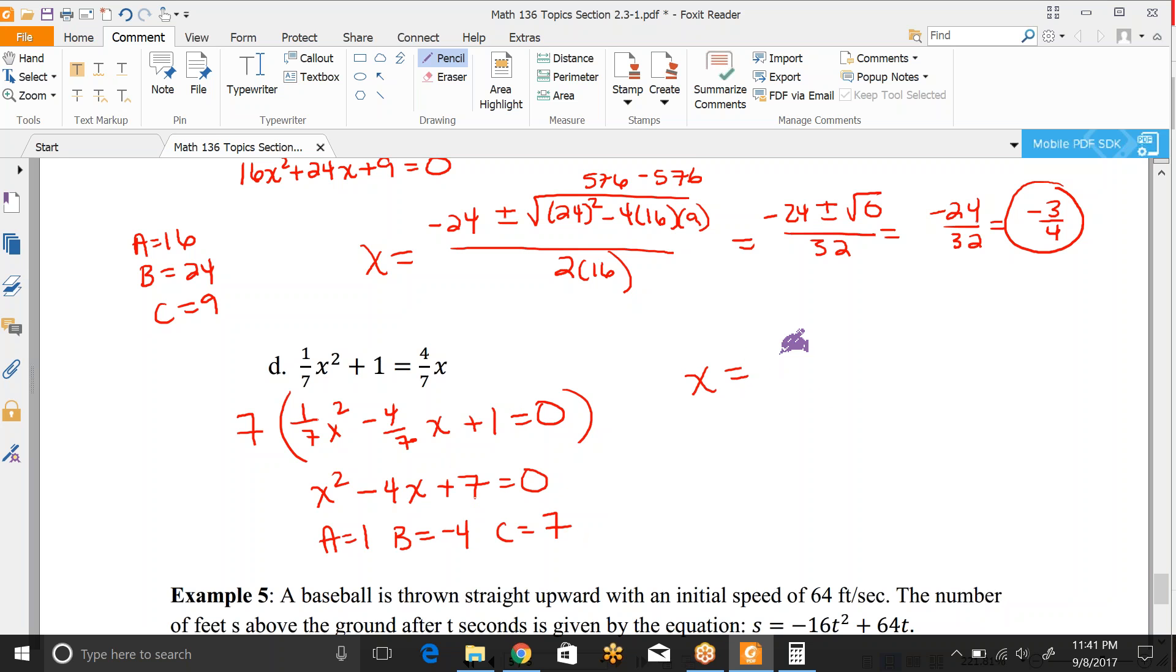So this is x = -(-4) ± √((-4)² - 4(1)(7)) / 2(1). So that's 16. This is negative 4 times 7, so that's going to be negative 28. So this case is kind of interesting because we get a negative underneath our radical. So 16 minus 28 is negative 12. Now that is not a real number. So in this specific section, 2.3, we don't answer these. If there is a negative underneath the radical, that's not a real number.